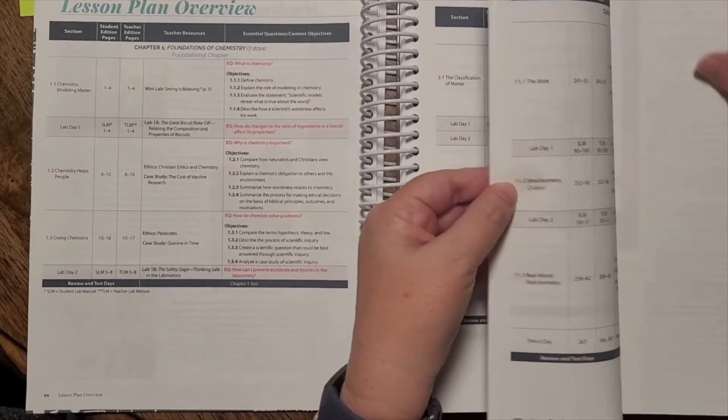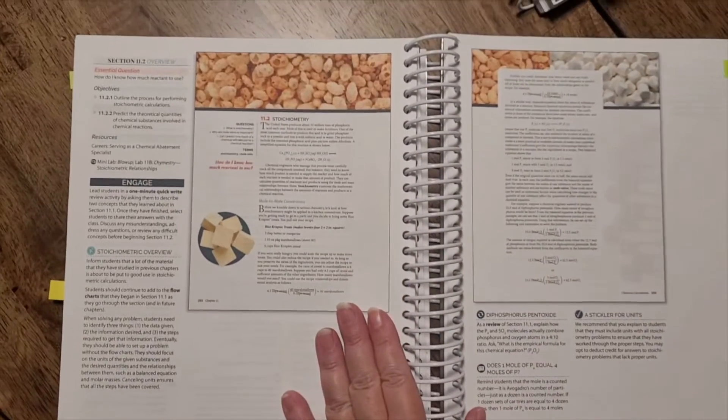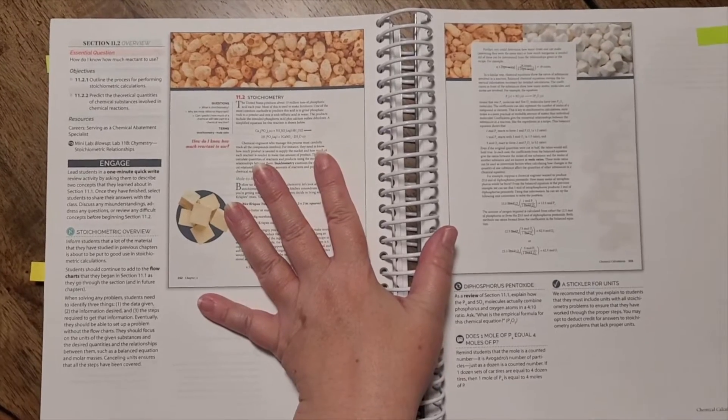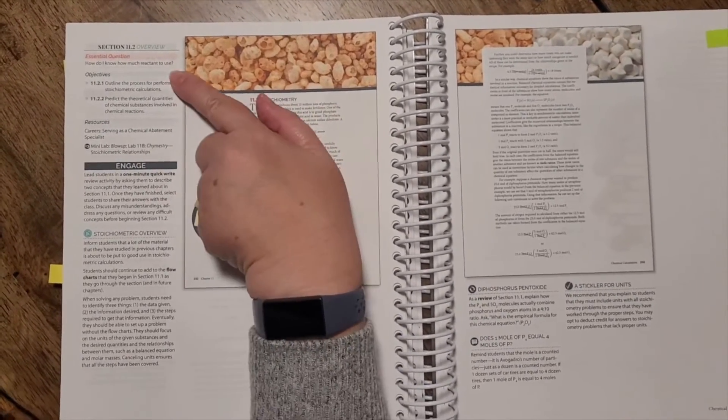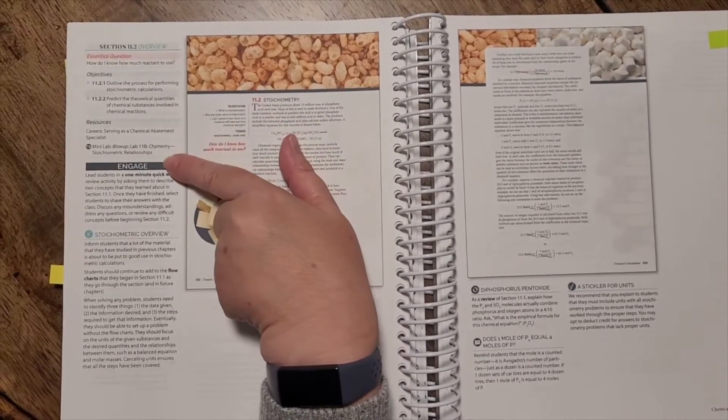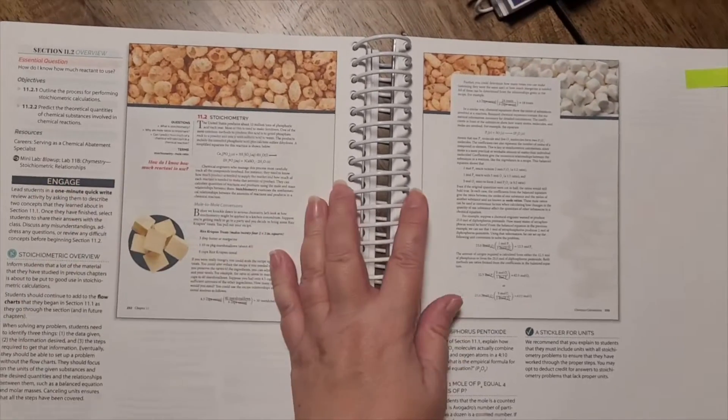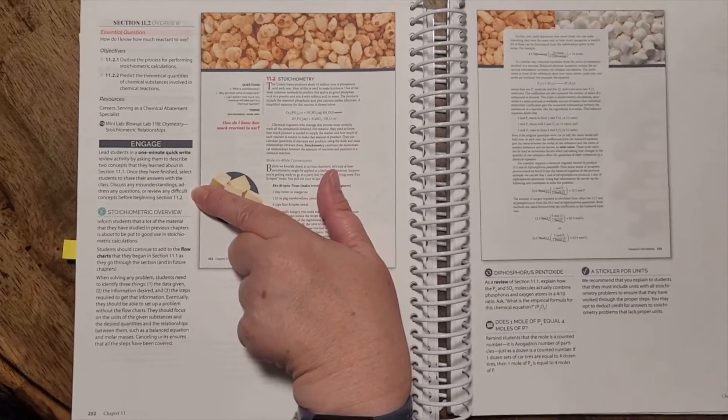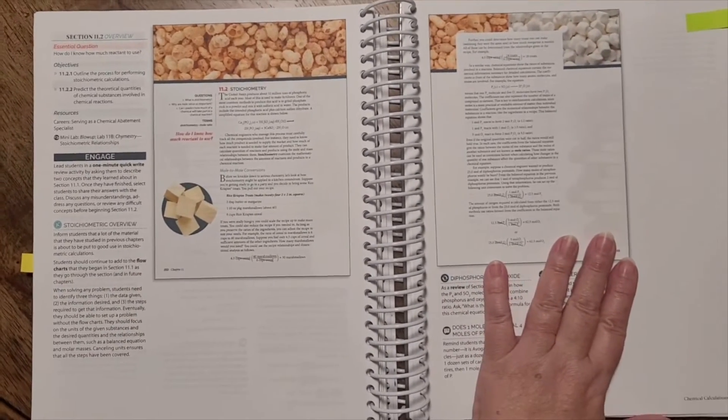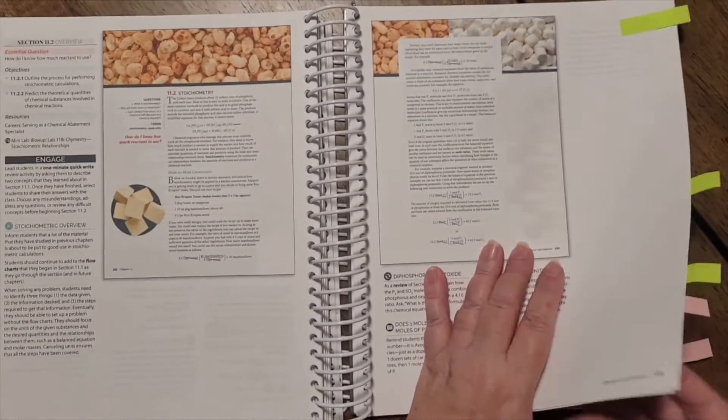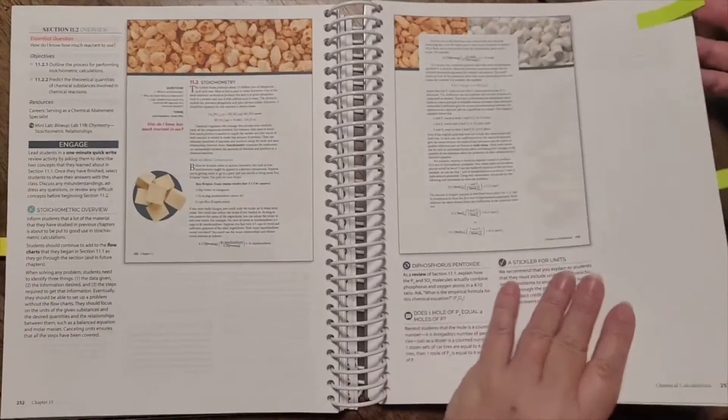Now let's go on to a chapter. We're going to go to chapter 11. And we're going to look at this section on stoichiometry because this is where the meat and potatoes of chemistry begins. So you'll notice here you have an essential question that you would ask to think about. Here are the objectives and here are some of the resources that you might need. It's reminding you that you're going to have a mini lab in a little bit. It talks about engaging, gives an overview. It talks about this flow chart that you can find in the appendix of the teacher's edition. And the student also has this appendix in their book as well. So this is a great tool and help for you as you're working.